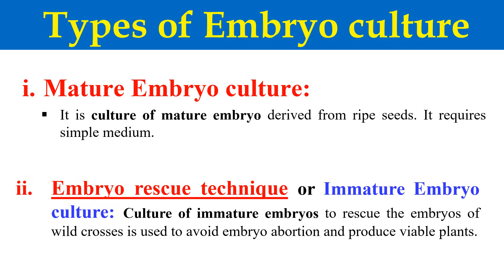The second type is immature embryo culture, which is also known as the embryo rescue technique, because here we are culturing the immature embryo — rescuing embryos from wide crosses. When we perform crosses of two different species, there are chances the embryo will not survive and will undergo abortion. In that case, we rescue the immature embryo from those wide crosses and culture it. The immature embryo culture technique is also known as embryo rescue because we are rescuing the immature embryo from abortion. The media for this technique has some special requirements.